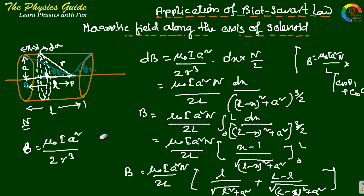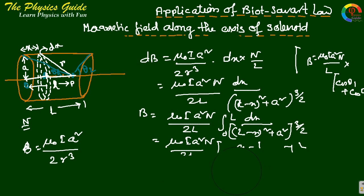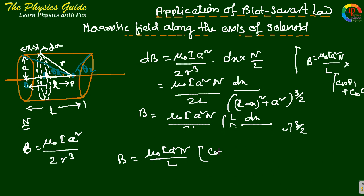So finally the result is that B equals mu0 I A squared N by L times cos theta 1 plus cos theta 2.